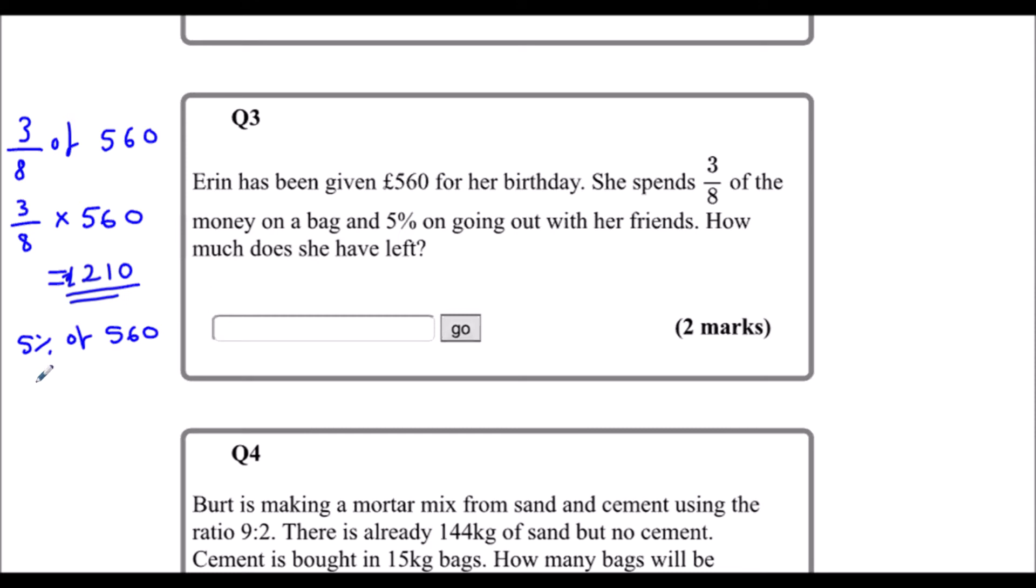We also need to work out 5%, so 5% of 560. There's lots of different ways of working out 5%, but as we did above, we can just change 'of' into a times, and in the calculator, if you can use the percentage button, it's just 5% times 560, which is £28. So how much does she have left? Well, 560 she started with, take away 210, and take away 28. Just type it into the calculator, and I've got £322 left.